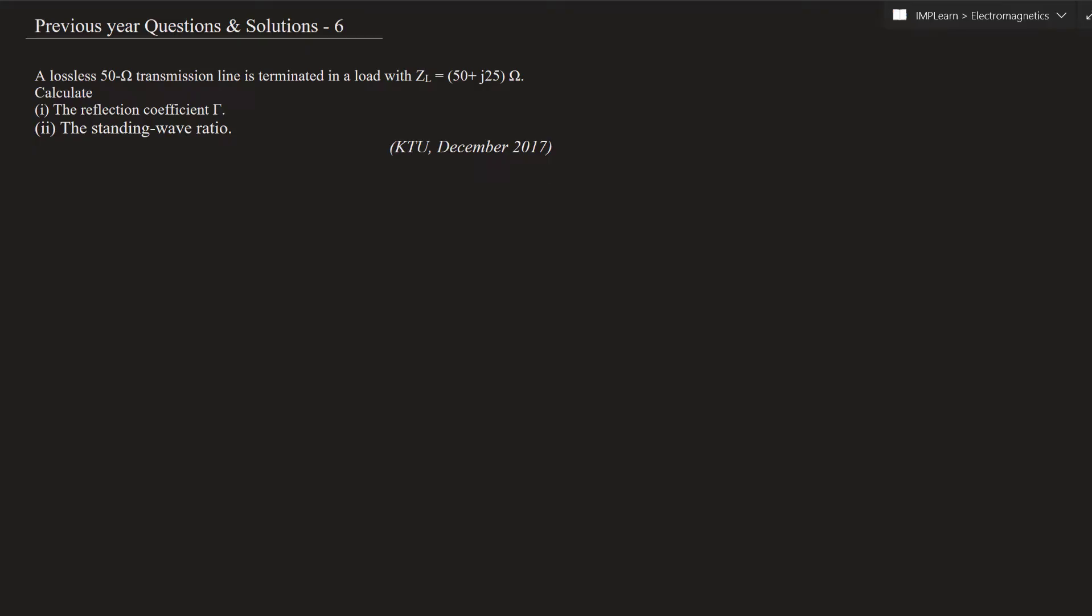Next question is: a lossless 50 ohm transmission line is terminated in a load with ZL equal to 50 plus 25j ohm. Calculate the reflection coefficient and standing wave ratio. December 2017 KTU question.